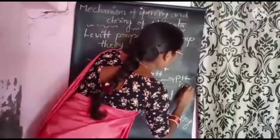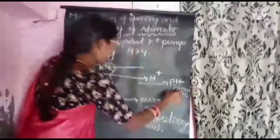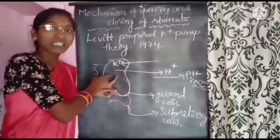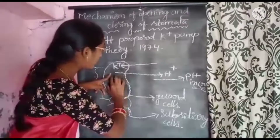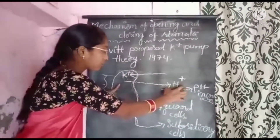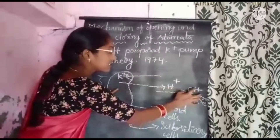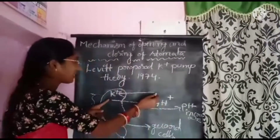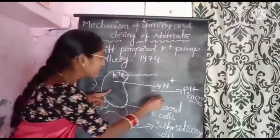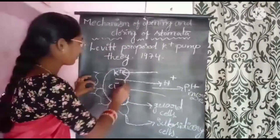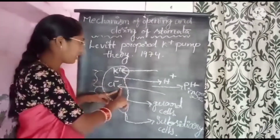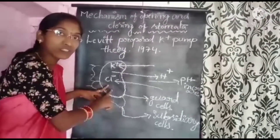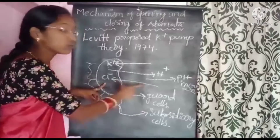pH increases in guard cells due to proton efflux. When K+ ions enter the guard cells, protons immediately move out, causing pH to increase inside the guard cells. Accumulation of K+ ions is also associated with Cl- (chloride) ions entering via passive transport. So both K+ ions and Cl- ions enter the guard cells together.